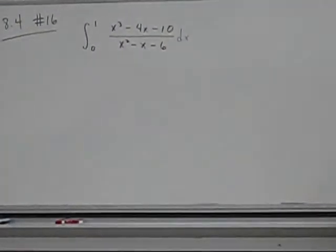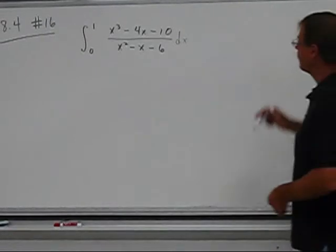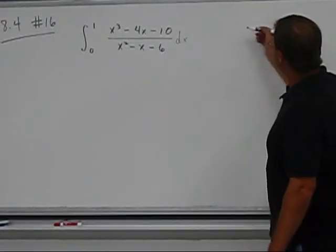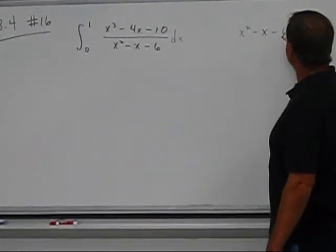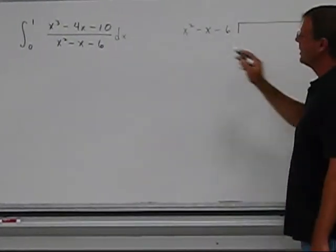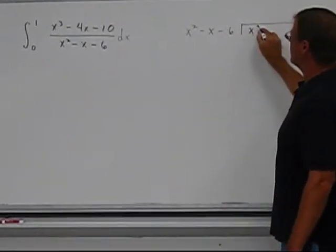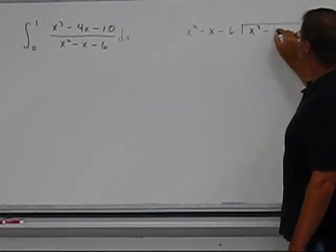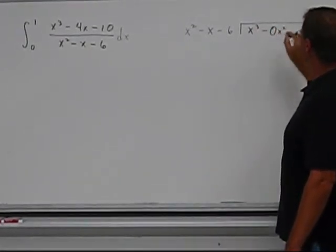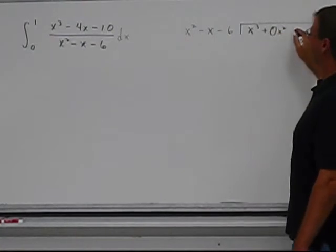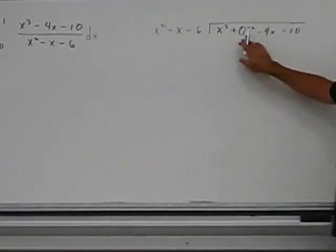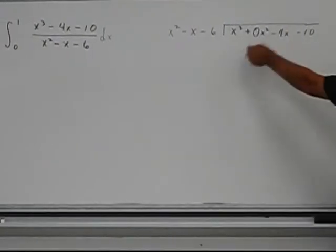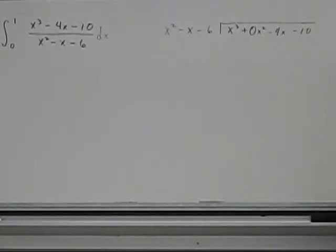In this case, what we can do is we can do long division. So we're going to take the denominator, which is x squared minus x minus 6, and we're going to divide into the numerator, which is x cubed minus, I'm going to include a 0x squared minus 4x minus 10. I added the 0x squared so that I have all the powers in sequence there.